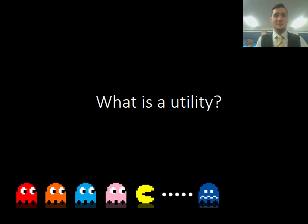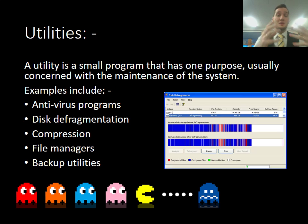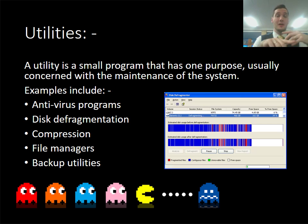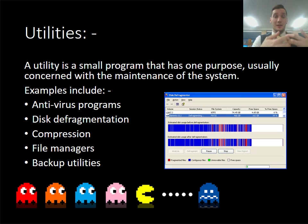So what was a utility? When discussing the difference between a utility and an application, we decided that a utility is a small program that has one purpose — it's there to do one job — and it's usually concerned with the maintenance of a system. If you want to make sure your computer is running efficiently, you would carry out utilities on it.